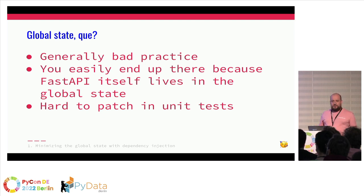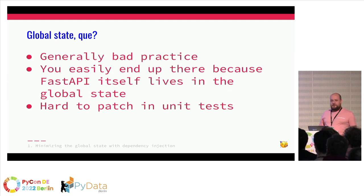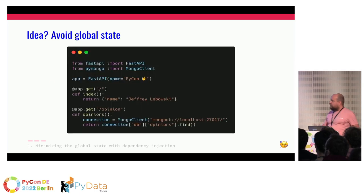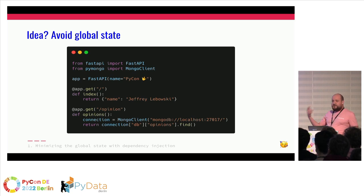You easily end up putting a lot of stuff in your global state when you just start, especially if you don't read documentation. FastAPI is in the global state, so you automatically start adding things there. But it's hard to patch in unit tests. You could move the global state into your function and connect to the database there, but the downside is that MongoDB, Kafka, and Redis use connection pooling or persistent connections, so you always have extra network traffic to set up that connection. This is not an ideal solution either.